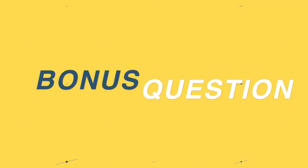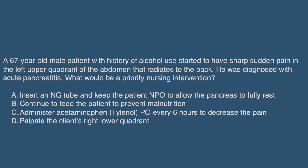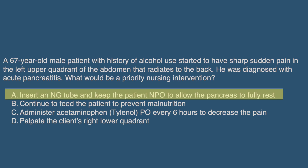It's time for the bonus question — let's test your knowledge. A 67-year-old male patient with a history of alcohol use started to have sharp sudden pain in the left upper quadrant of his abdomen radiating to the back. He was diagnosed with acute pancreatitis. What would be a priority nursing intervention? The correct answer is A: Insert an NG tube and keep the patient NPO to allow the pancreas to fully rest.